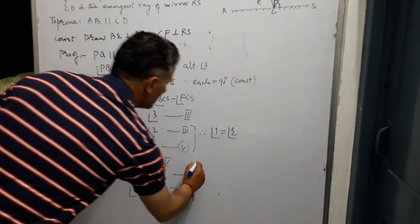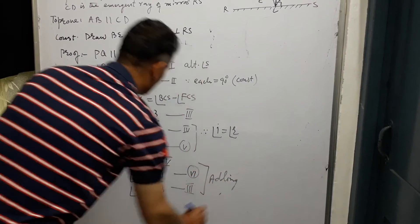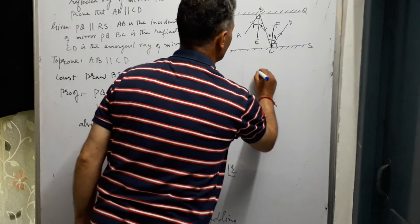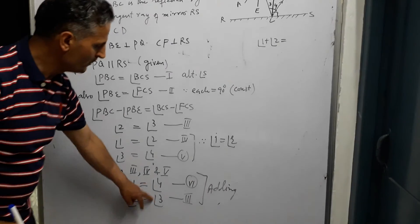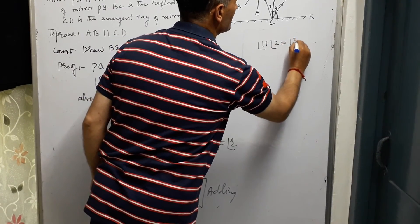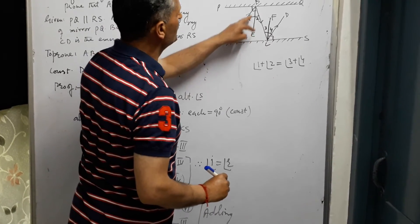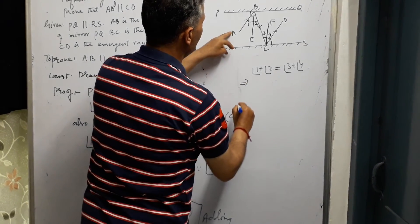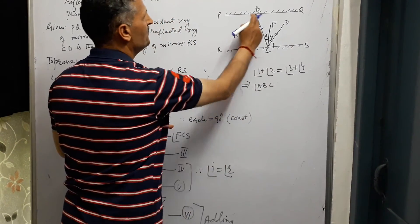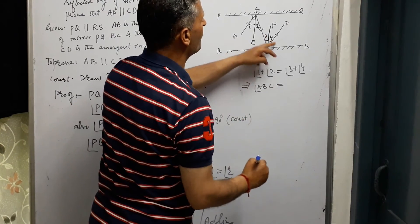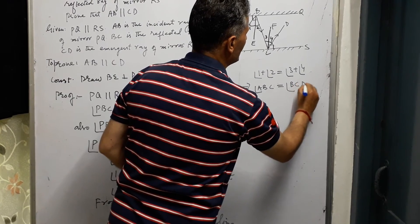Adding equations 3 and 6 — that is, angle 1 equals angle 4 and angle 2 equals angle 3 — we get angle 1 plus angle 2 equals angle 3 plus angle 4. Now, angle 1 plus angle 2 is another name for angle ABC, and angle 3 plus angle 4 is angle BCD. So angle ABC equals angle BCD.